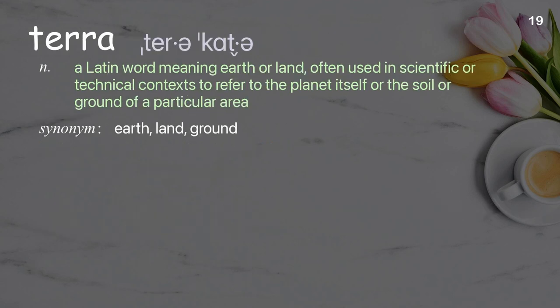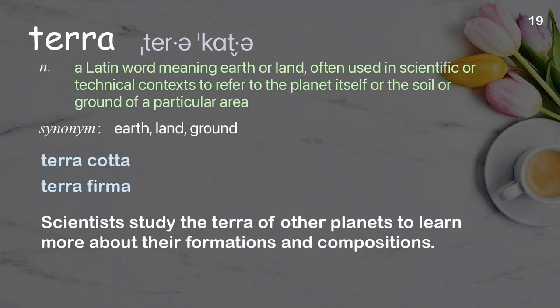Terra: a Latin word meaning earth or land, often used in scientific or technical contexts to refer to the planet itself or the soil or ground of a particular area. Examples: terra cotta, terra firma. Scientists study the terra of other planets to learn more about their formations and compositions.